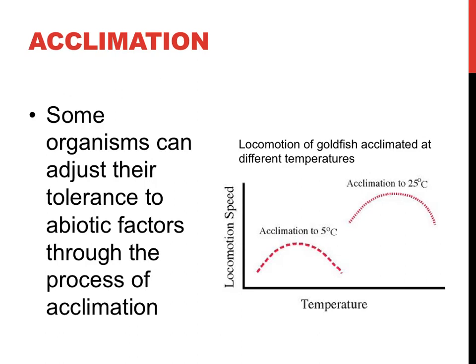Over a period of days or weeks, organisms can sometimes adjust their tolerance to some abiotic or non-living factors in a process called acclimation. As the example graphic to the right shows, if fish are held long-term in waters of different temperatures, their movement speed across a range of temperatures can be changed. The fish acclimated at 5 degrees Celsius would move at a much slower rate at the same temperature as a fish acclimated at 25 degrees Celsius.